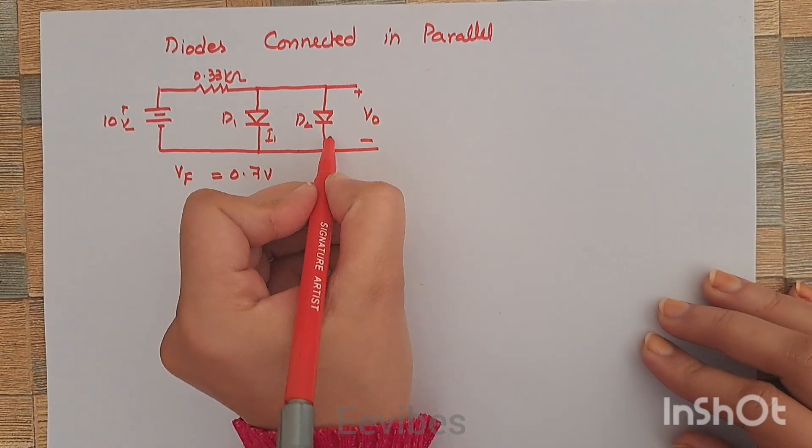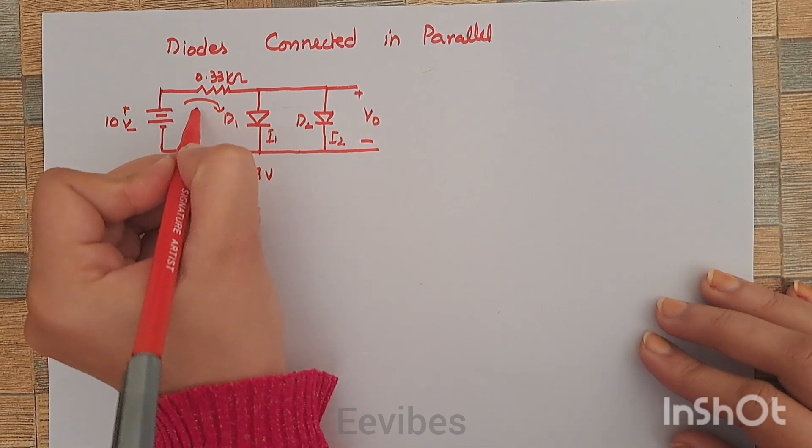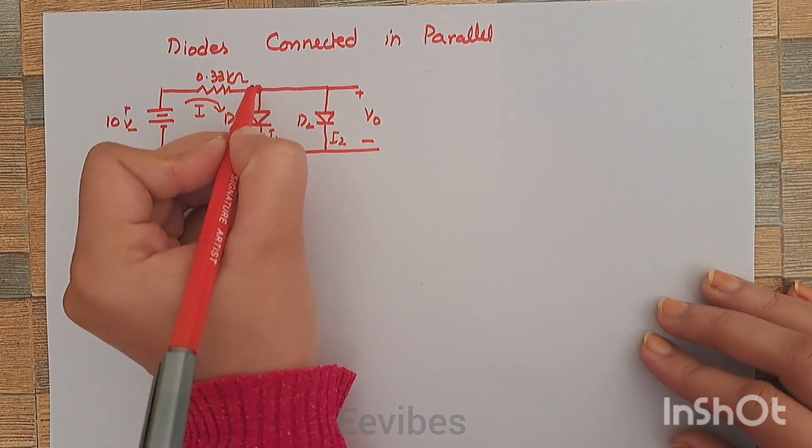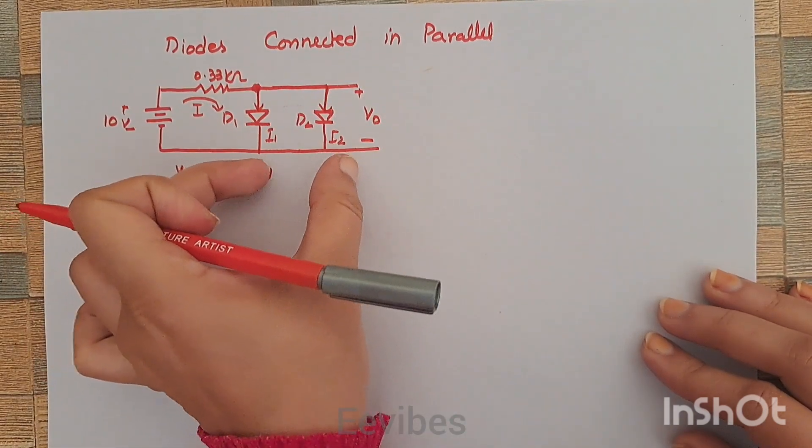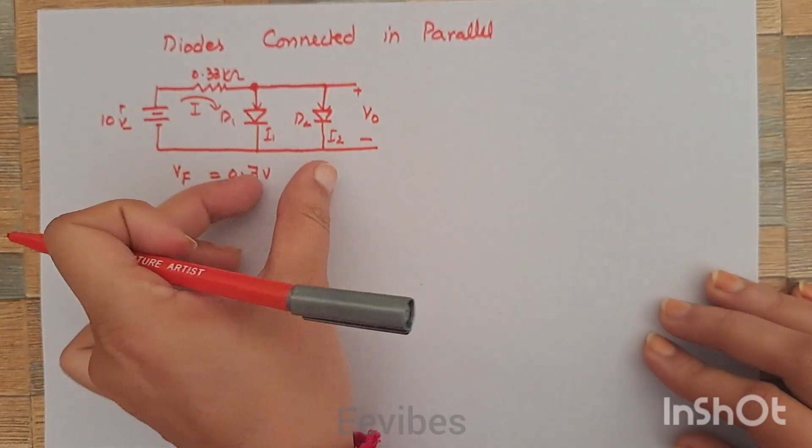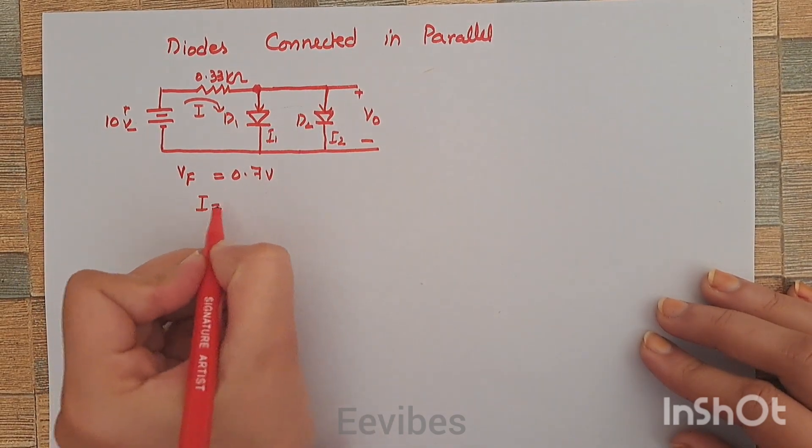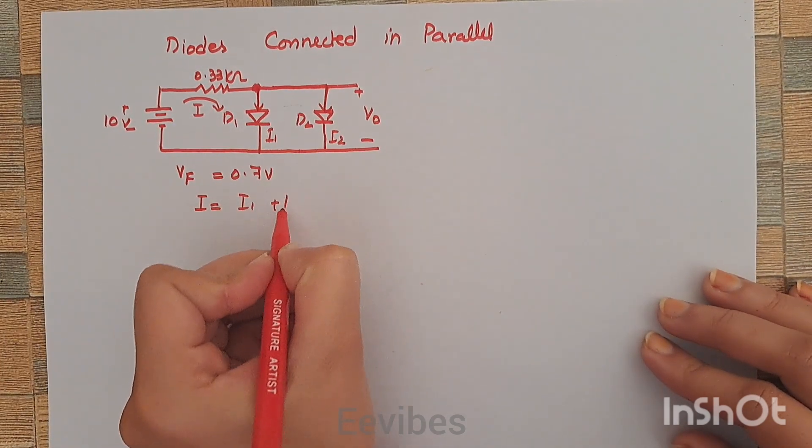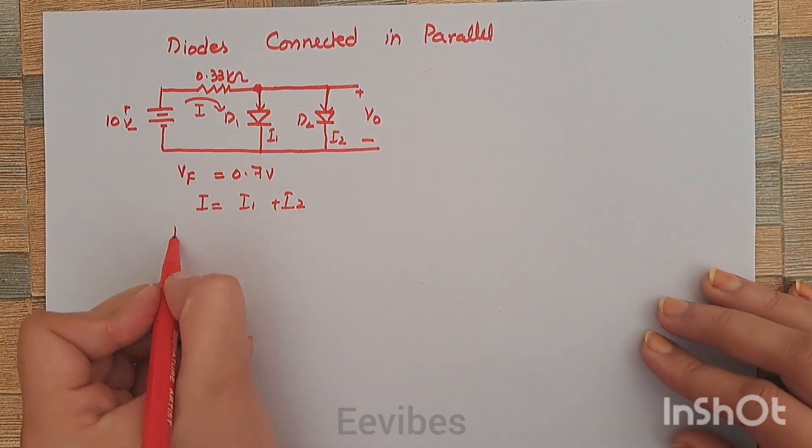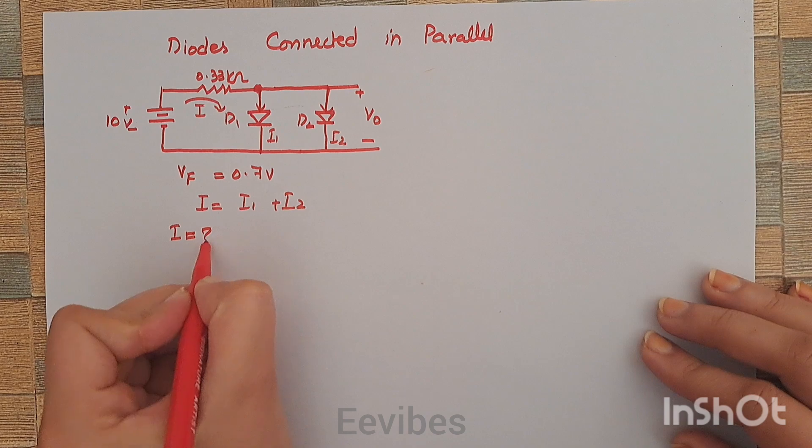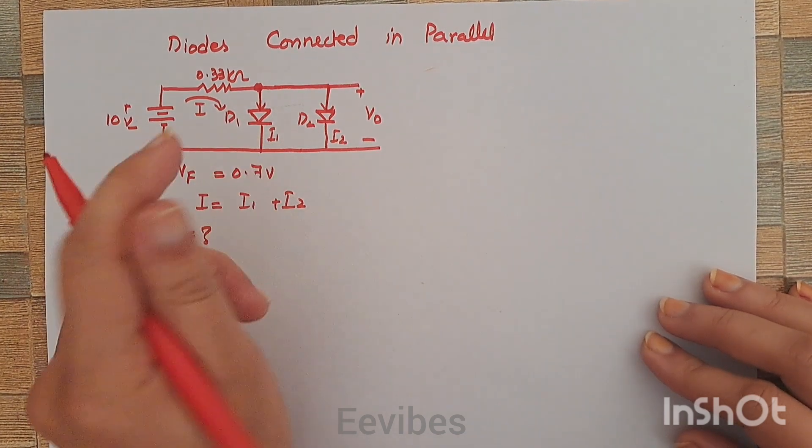Let's call this current I1 and this is I2, while this is the current I. This current I is actually divided into two branches since the diodes are connected in parallel. In parallel, the current is divided and we can say that I is equal to I1 plus I2. So the first step is to determine the value of this current I.